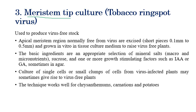In meristem tip culture, plant viruses cannot grow under in vitro conditions, so virus-free plants can be raised. The basic ingredients required are mineral salts including macro and micronutrients, sucrose, a growth-stimulating factor such as indoleacetic acid or gibberellic acid, and sometimes agar. Small clumps of cells of the planting material, even from virus-infected plants, can give rise to virus-free plants through this technique.